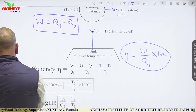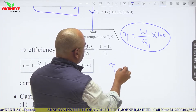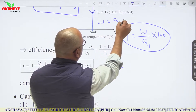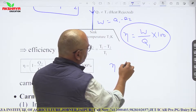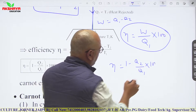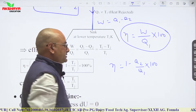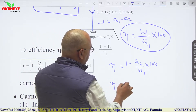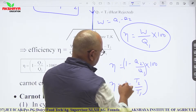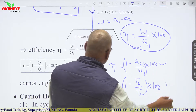Efficiency can also be expressed as η = (1 − Q2/Q1) × 100. Since heat is proportional to temperature, we can also write η = (1 − T2/T1) × 100. These three relations give the efficiency of a heat engine.